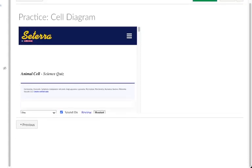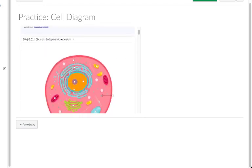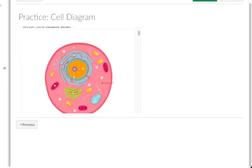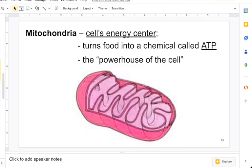Practice cell diagram is right here. It will say click on the endoplasmic reticulum, and then you can practice from there. You can get it wrong or you can get it right. Click on lysosome. Okay, now to move on with our lecture.